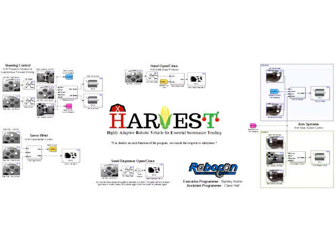The finished program allows Harvest to operate at a high level of precision and efficiency, picking corn and planting seeds at the same time. Every segment of the program works in concert to make Harvest the ultimate corn planting and gathering machine.